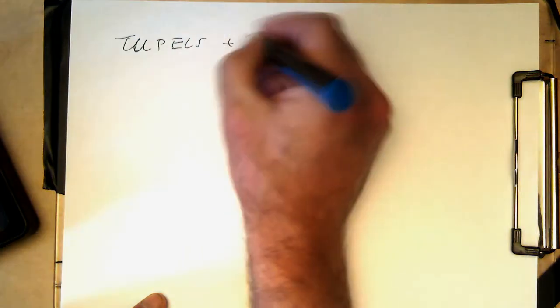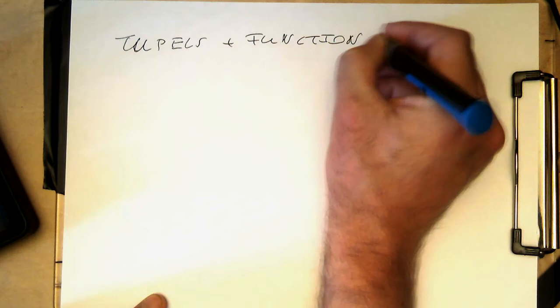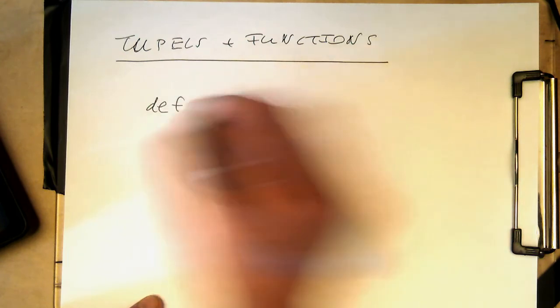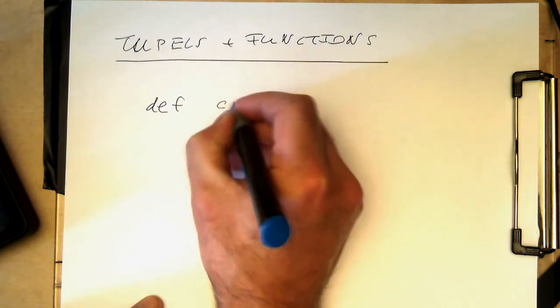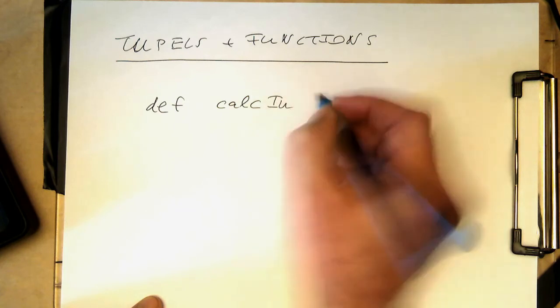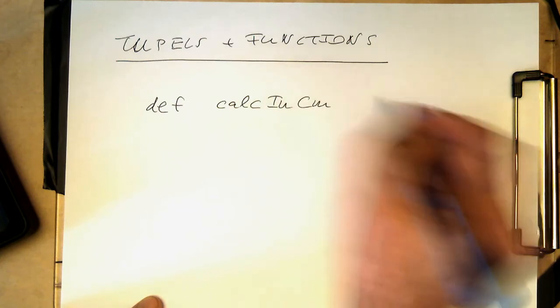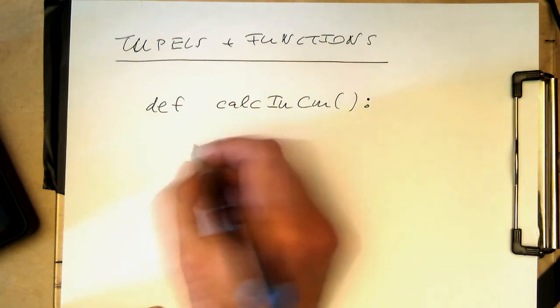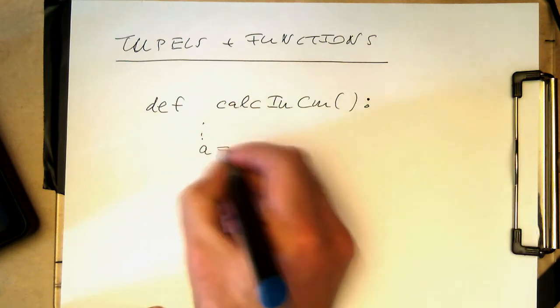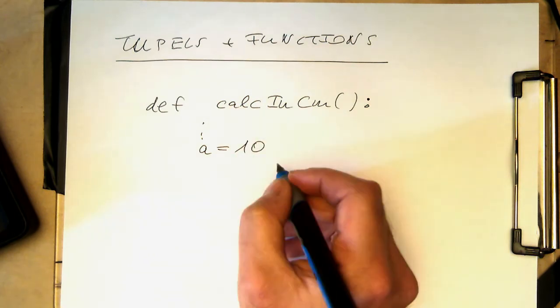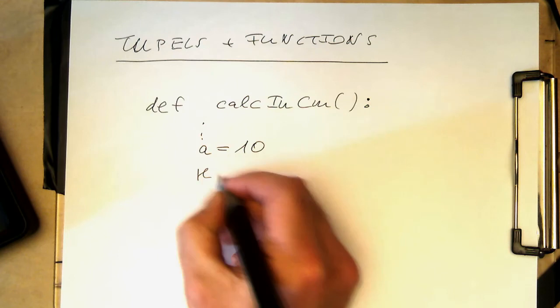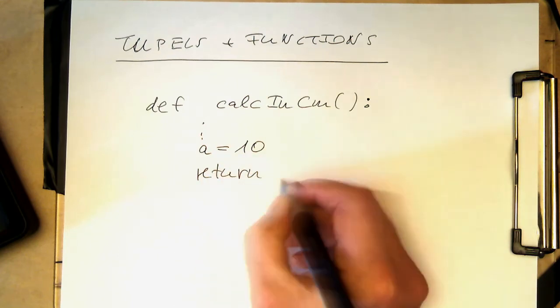Tuples and functions. So remember when we're defining a function, def, and then let's say here, variable calc in centimeter, and we're doing some fancy calculations in here. So we have here at some point a variable a, and then this becomes 10, for example. And we would like to say that this variable is in centimeter for the return.